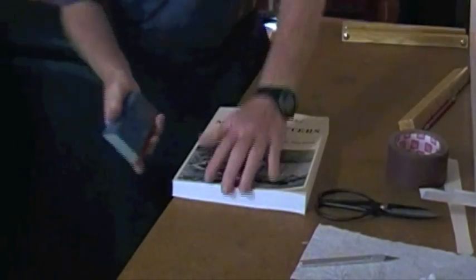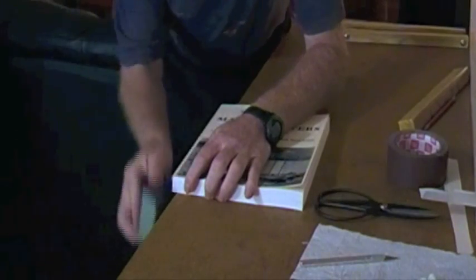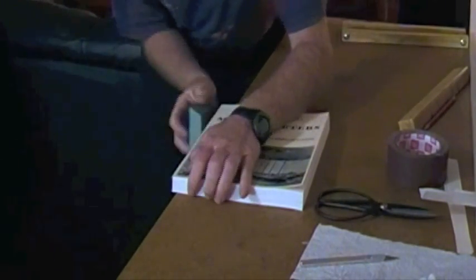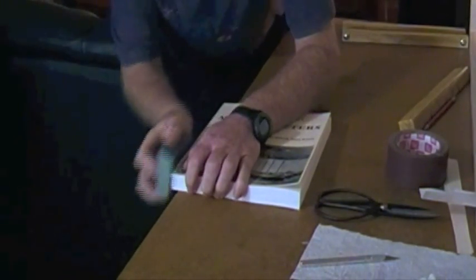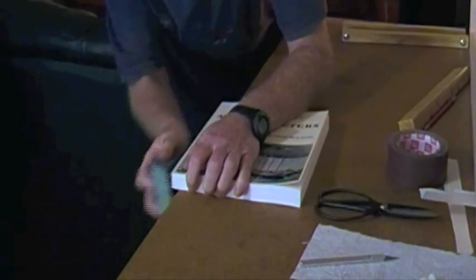Then it's 120 grit sanding block. Just to take that sharp edge off. It also roughens up that paper so the binding tape will stick there.